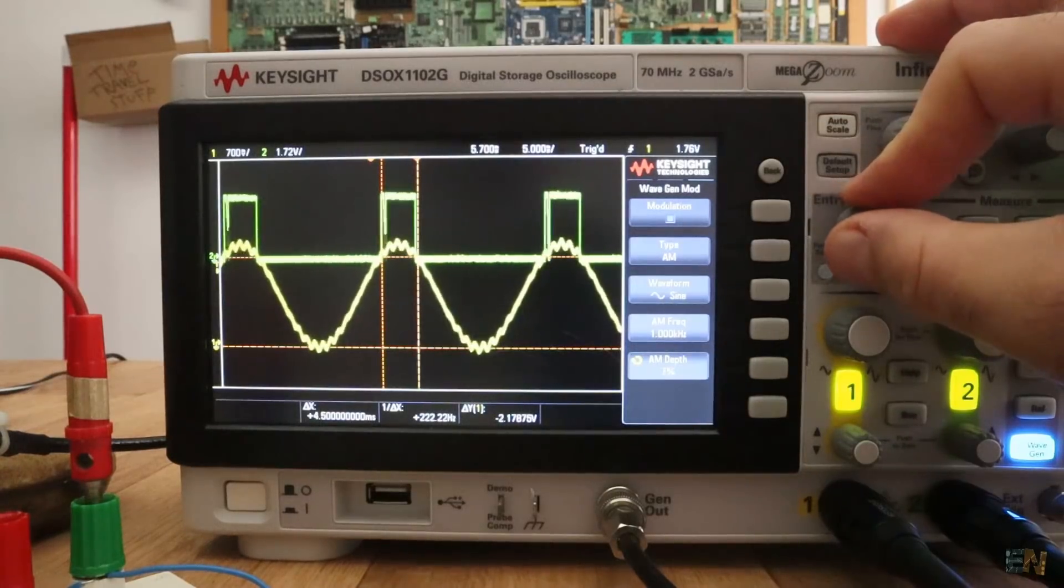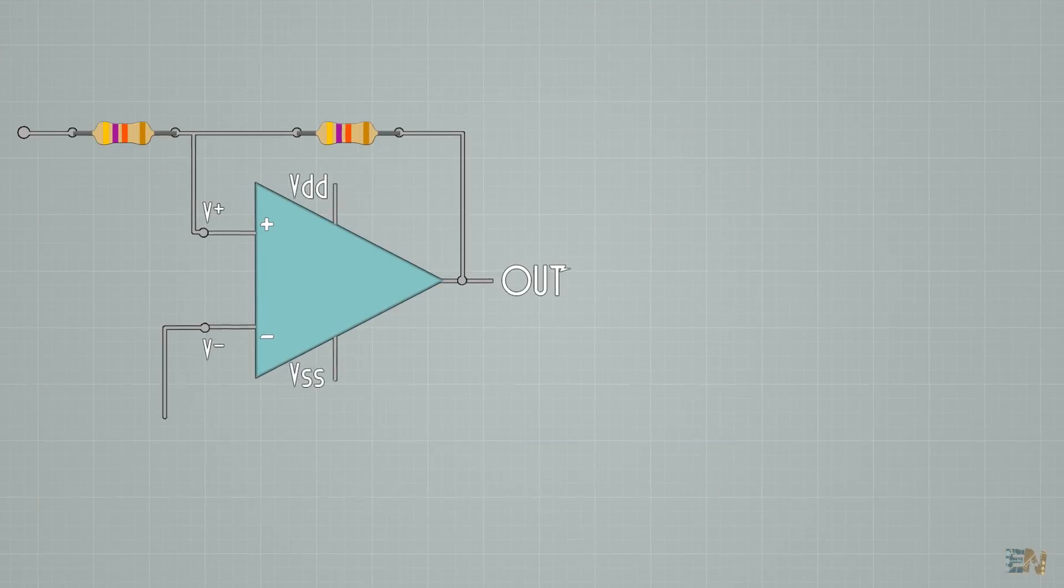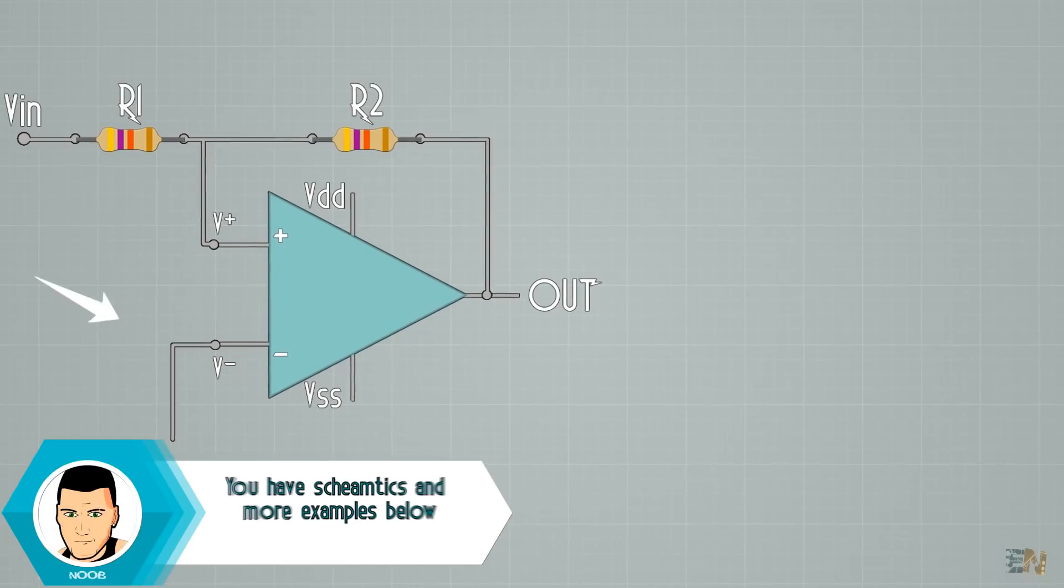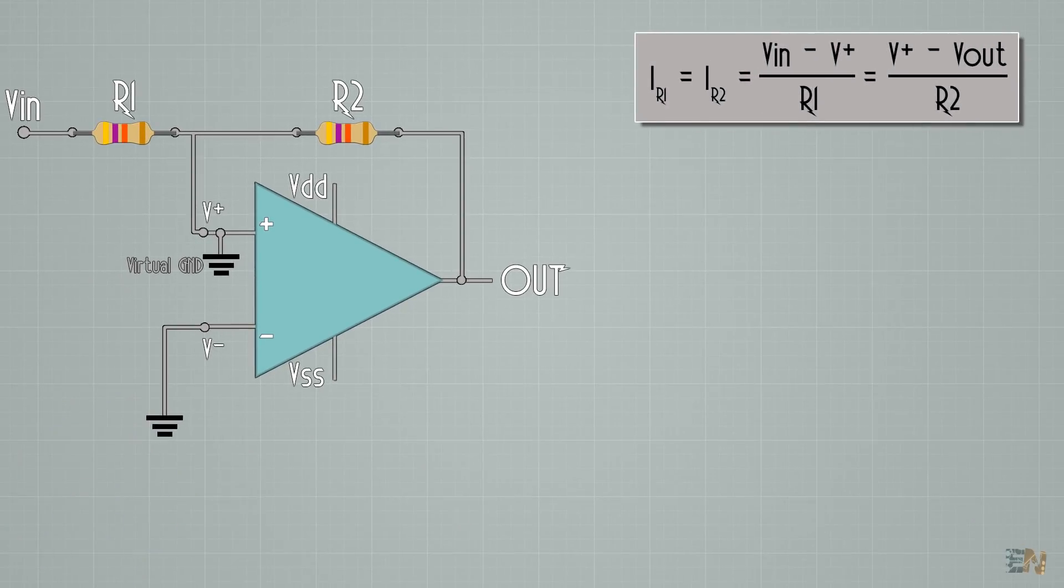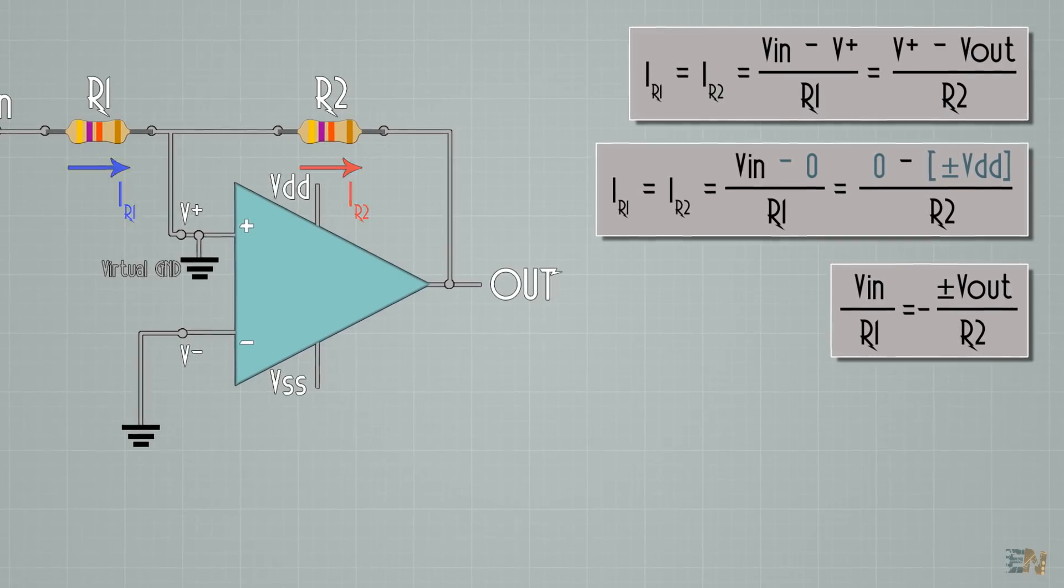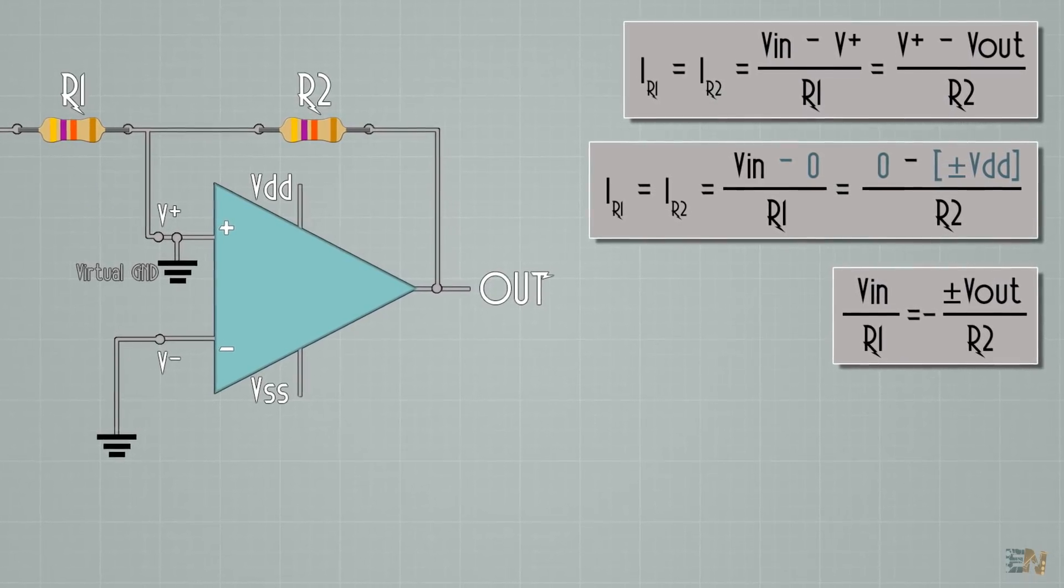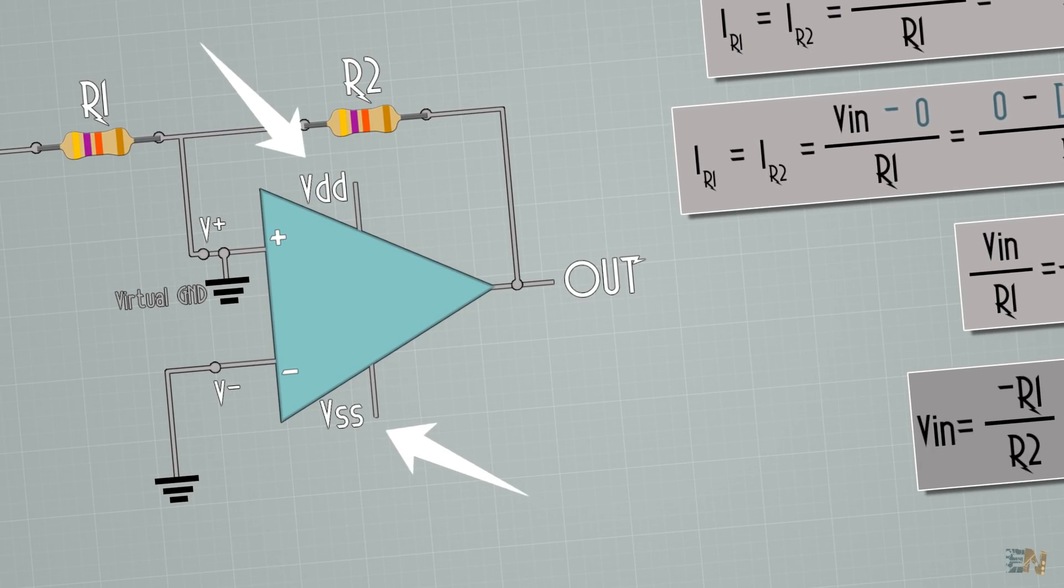Okay, so let's say that you don't have a Schmidt trigger IC, you only have op-amps. Well, here is a Schmidt trigger configuration made with op-amps. Negative input connected to ground, so that implies that the V plus point will be ground as well. So, we have these two equations. The current that passes R1 is the same that passes R2, since V plus is zero. So, we get that V in divided by R1 is equal to negative V out divided by R2. So, that tells us that V in is equal to negative R1 divided by R2 and multiplied by the V out, where V out could have the values of minimum and maximum supply voltage.